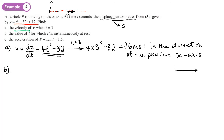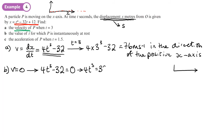Part b: find the value of t for which P is instantaneously at rest. Instantaneously at rest means v = 0, so we set 4t³ - 32 = 0. This gives t³ = 8, so t = 2. The particle is at rest after 2 seconds.